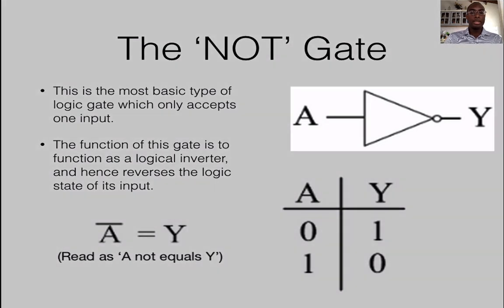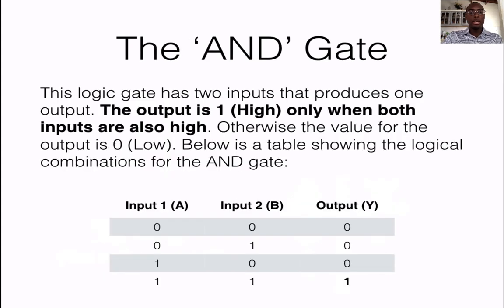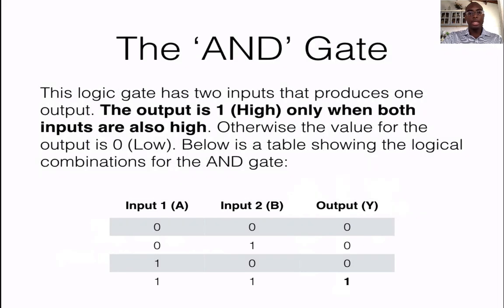This is the basic symbol of a NOT gate and the next gate is the AND gate. This logic gate has two inputs and produces one output. The output is 1 when both inputs are also high. Otherwise, the value for the output is 0 or low. And below we have what is called a truth table which can show you the general logic behind the AND gate.